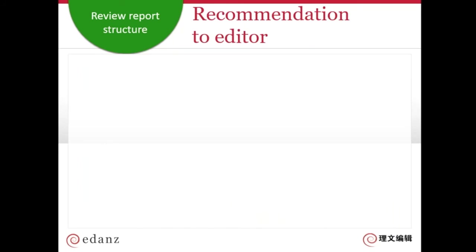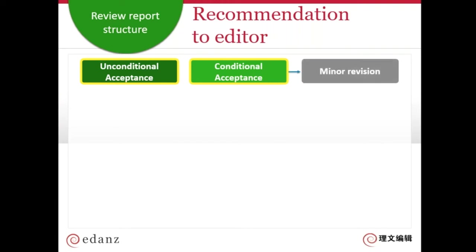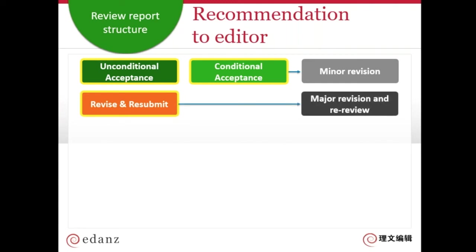In the recommendation part to the editor — whether in the scoring sheet or the comments to the editor — you have different choices. One is unconditional acceptance: accept as is, which will be quite rare, and the author doesn't need to make changes. Or you could have a conditional acceptance where you want the author to make minor revisions, and it's usually the editor or journal office that will check those revisions were made. Or you can say 'revise and resubmit,' which means bigger revisions and will require another peer review.